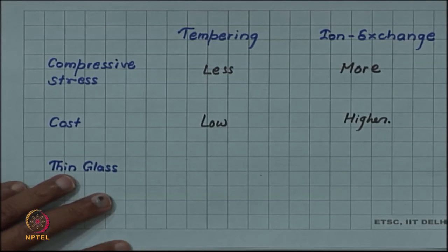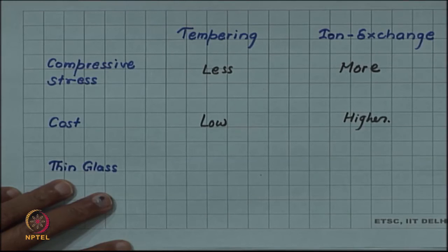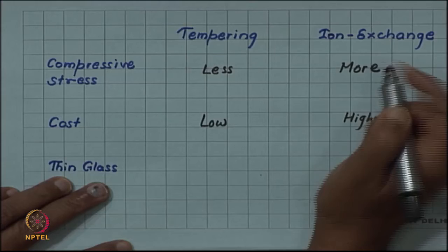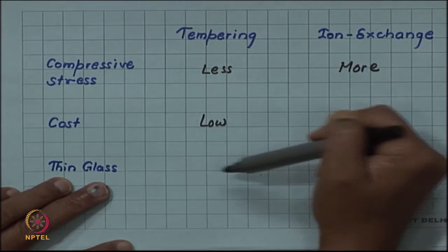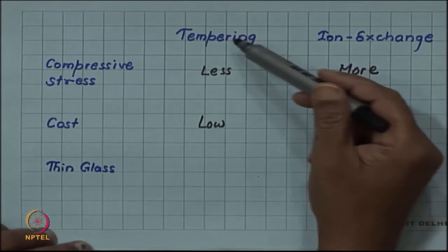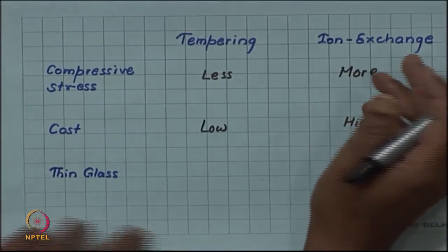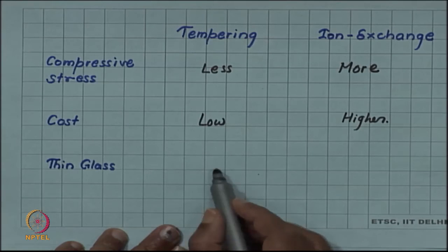And if the glass which has to be toughened is very thin like the cover of a smartphone, then that sort of thin glass cannot be handled by tempering, cannot be toughened by tempering because you remember tempering involves heating and then cooling with jets of air, and this can lead to severe warping and thermal stresses in a thin glass plate.